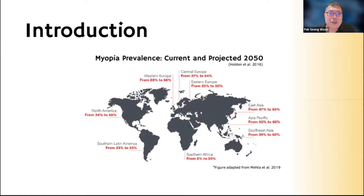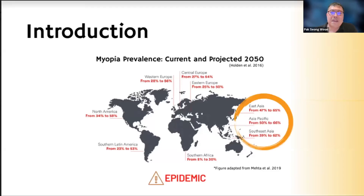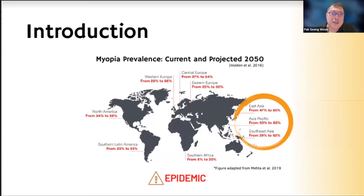So that is my journey in myopia, wearing glasses since age seven. We know that myopia prevalence is rising, and the study by Brian Holden et al. in 2016 states that by the year 2050, half of the world's population will be myopic, and about a billion will have high myopia of above minus five diopters — or 500 as we call it in Malaysia. This is alarming because every part of the world is affected, and particularly in East Asia, Asia-Pacific, and Southeast Asia, the rate is especially high.